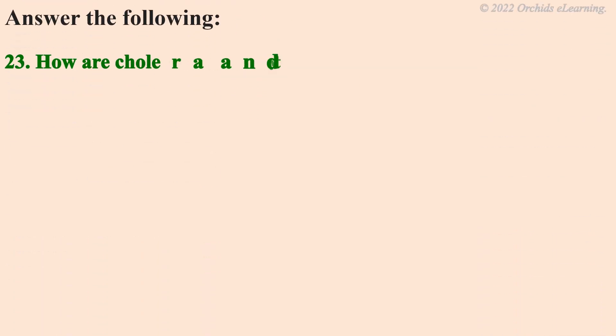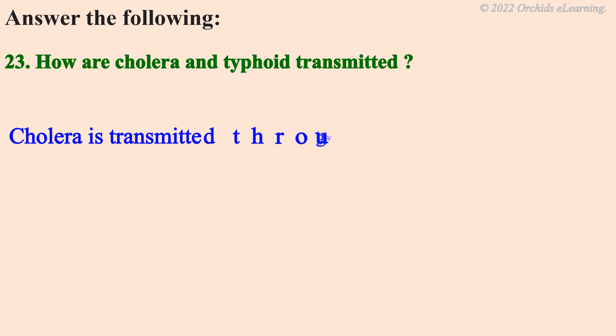How are cholera and typhoid transmitted? Cholera is transmitted through water or food, and typhoid is transmitted through water.